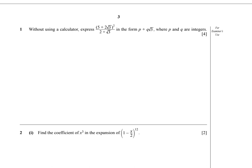In this question we have to express the expression (5 + 2√3)² / (2 + √3) in the form p + q√3, where p and q are integers.